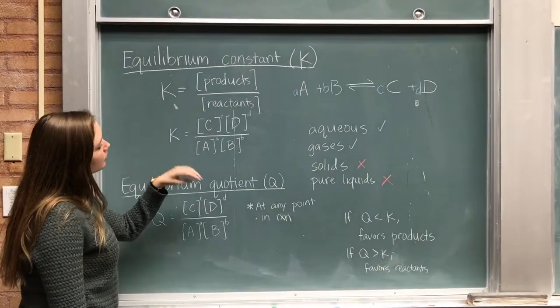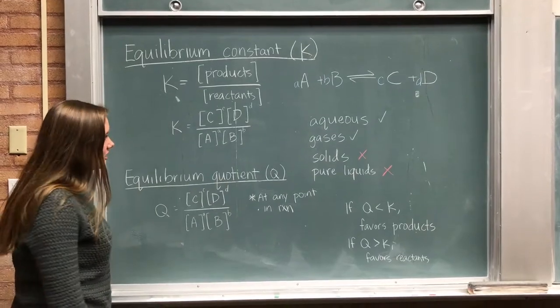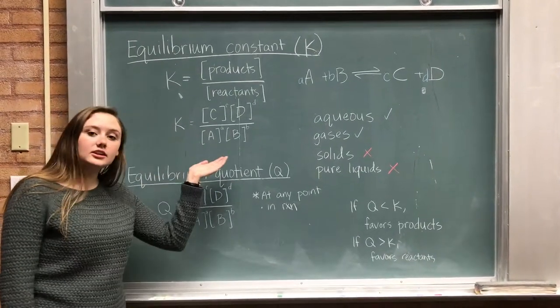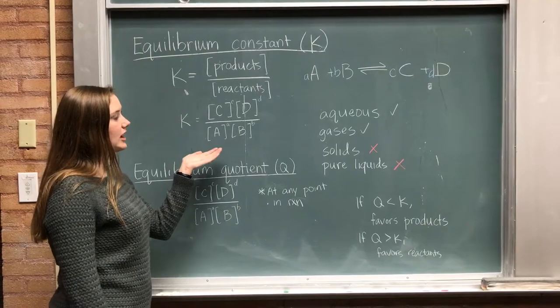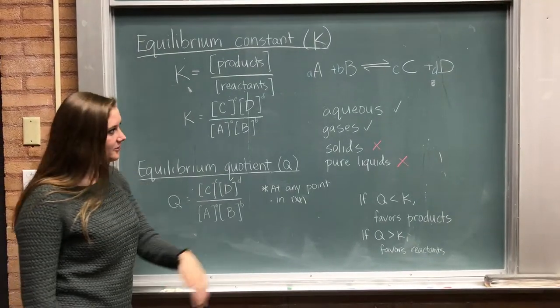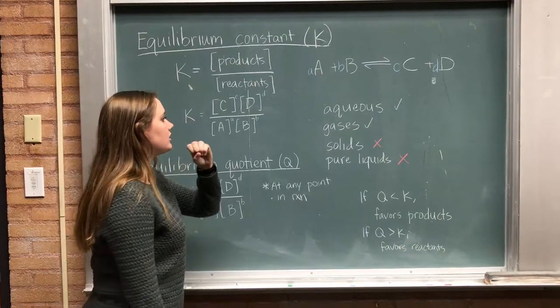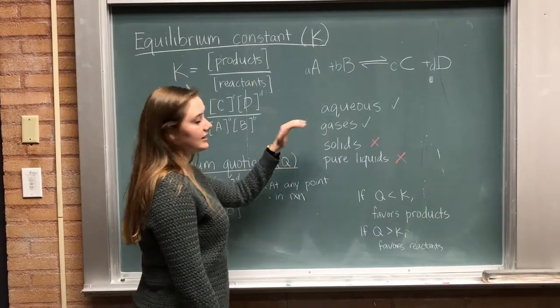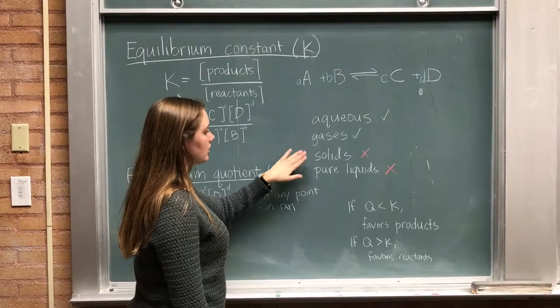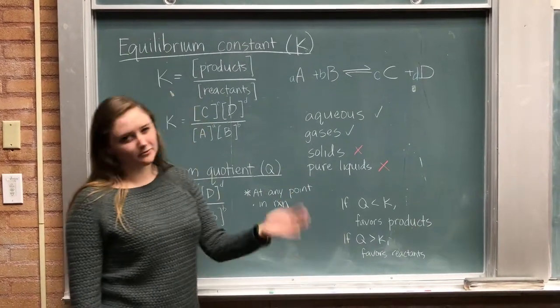over the reactants raised to their coefficients. So normally, in this case, we would be using the activity of these products and reactants. However, that's for a different lecture. But because of this activity use, we only include aqueous solutions and gases in our equilibrium constant. We're not going to include solids or pure liquids because they have activities of one.